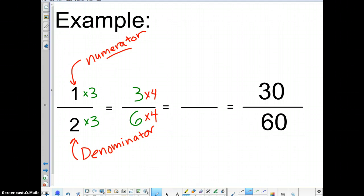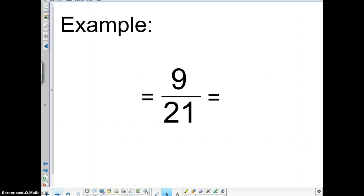So three times four gives me twelve. And six times four gives me twenty-four. Twelve twenty-fourths is also equivalent to one half. Okay. All of these fractions are equivalent to one another. They all mean the same thing. They're all equivalent to one half.